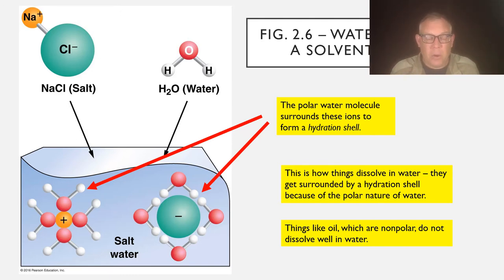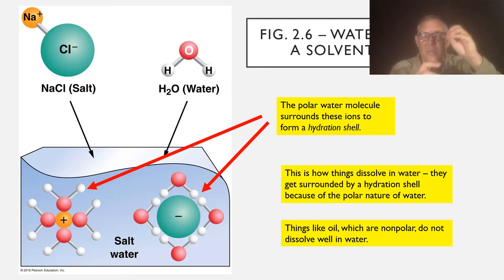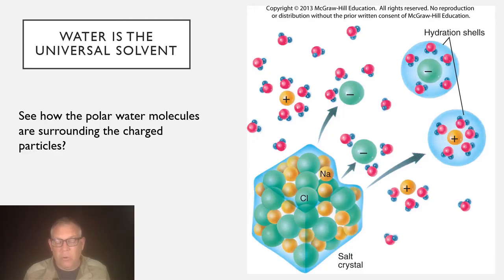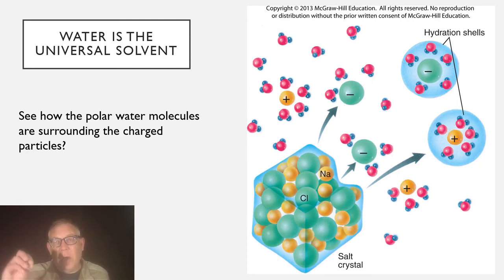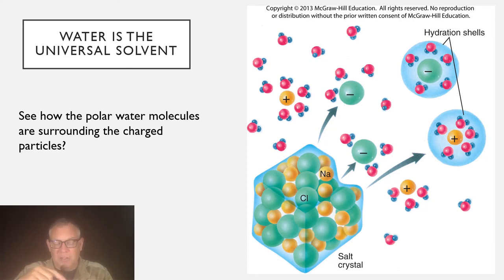When something dissolves in water, the water molecules all wrap around it — that's the hydration shell — and they can do that because of the polar nature of water. But if you have something that's non-polar like oil, you can't get this hydration shell because the polar water doesn't have anything to interact with. Here's another figure showing the hydration shells — pay attention to how the water molecules are oriented differently for the chloride ion versus the sodium ion, with the polar water molecules surrounding each charged particle.